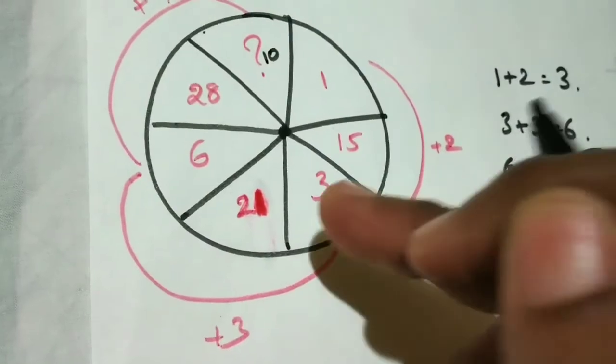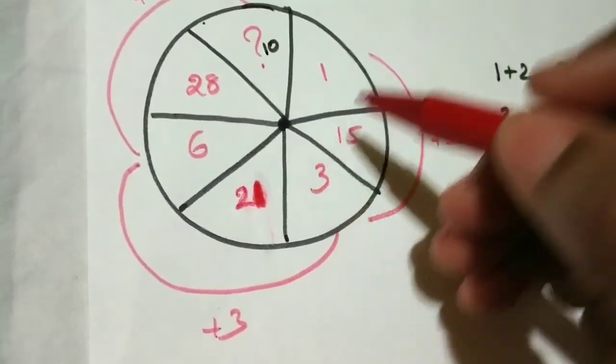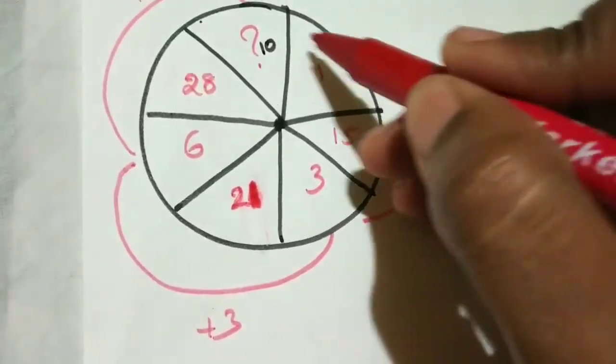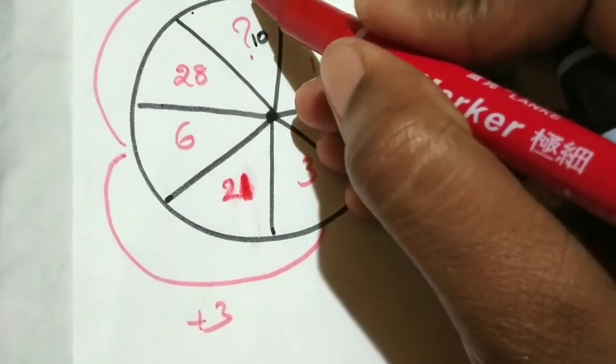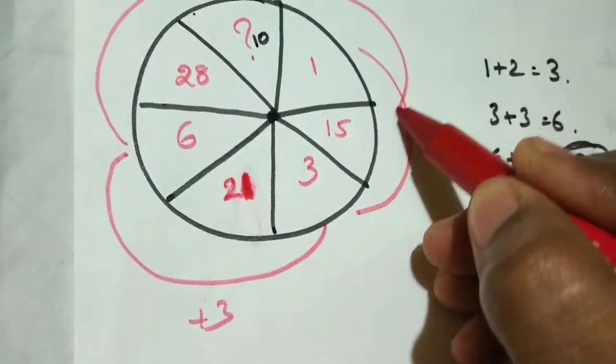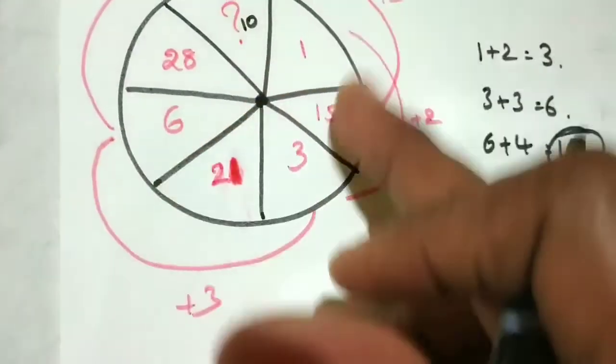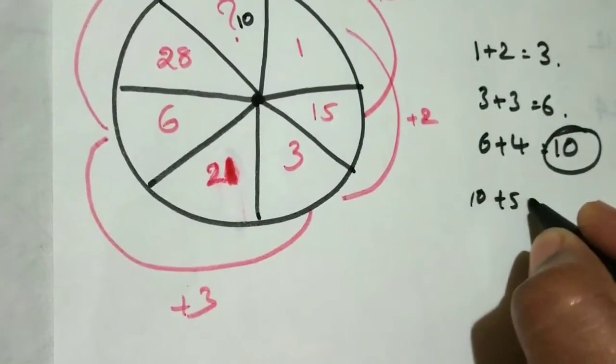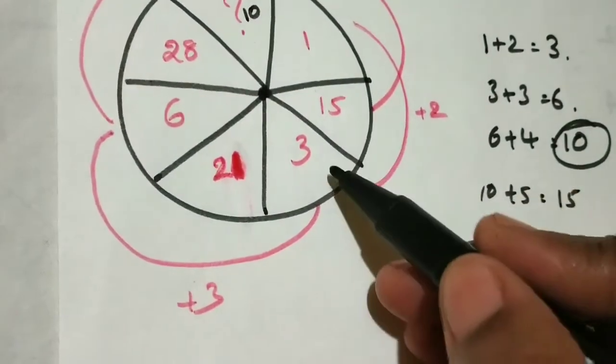That means you are leaving one box and you are checking. So here also leave this box and check for the next box: 10 plus 4. After, what we should add? Plus 5. Then only 10 plus 5 is equal to 15. Next leave this box and check.